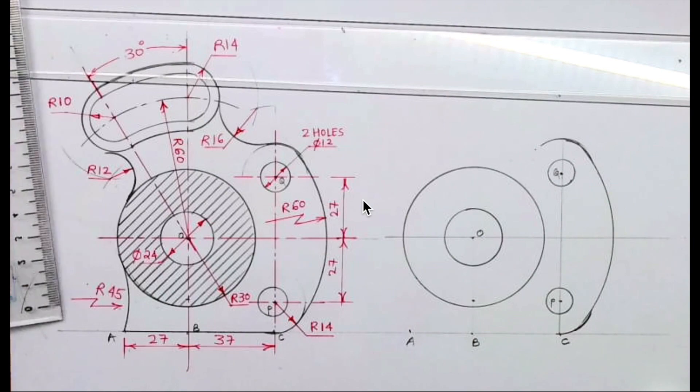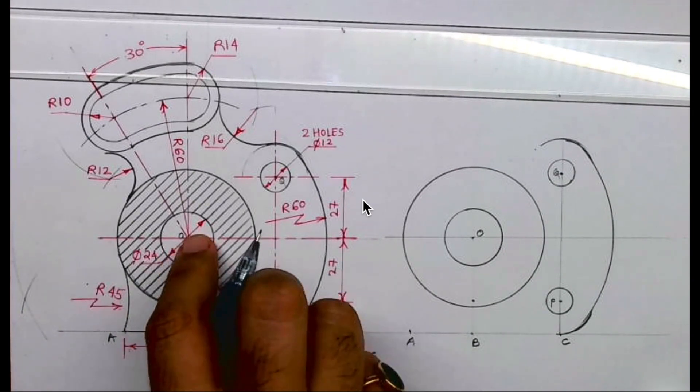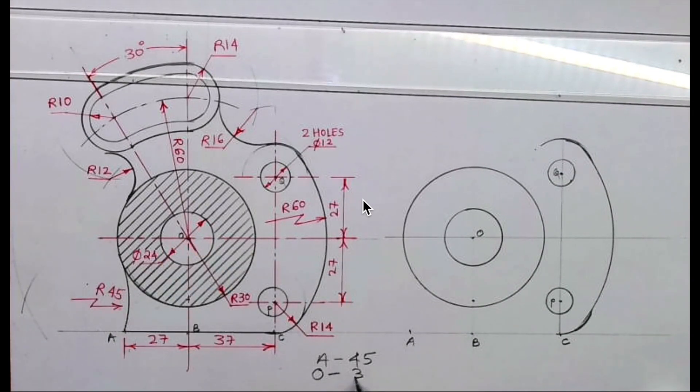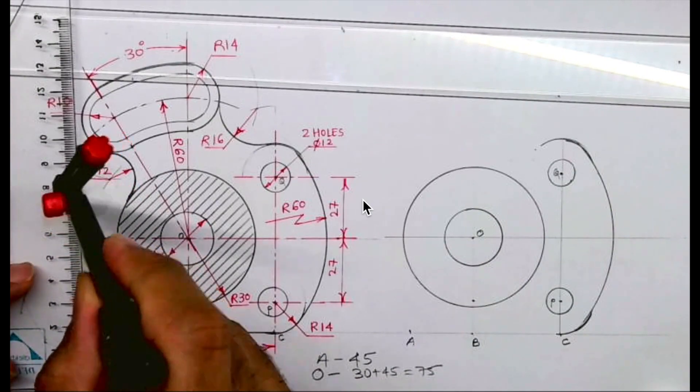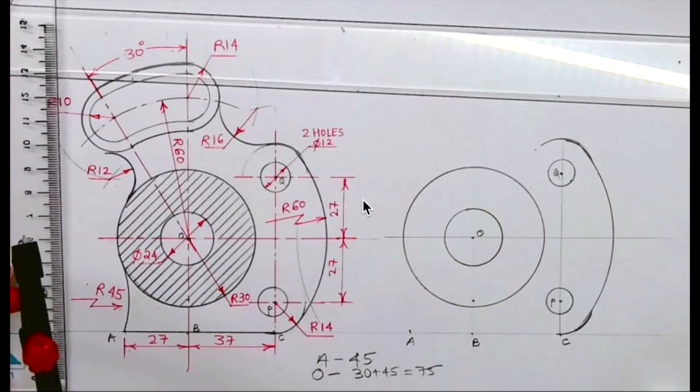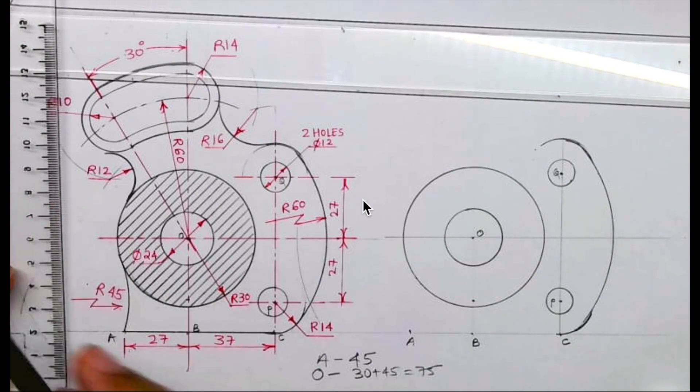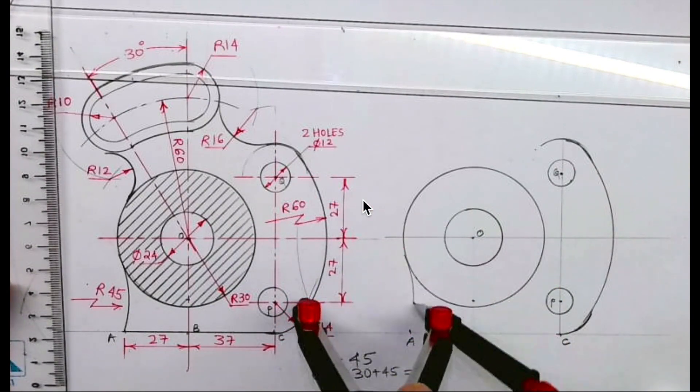Now after drawing this, we will see this radius 45. From A, I have to cut 45, and from O I will cut 30 plus 45. So from O we will cut 75, and from A we will cut 45. Wherever they intersect, from that point I can draw 45.